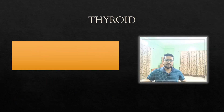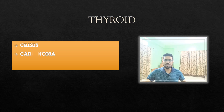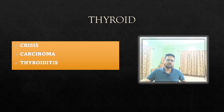For the thyroid chapter, the three important topics you must read are: thyroid crisis — an acute condition — thyroid carcinoma, and the types of thyroiditis. These are the key areas to focus on from the thyroid chapter.